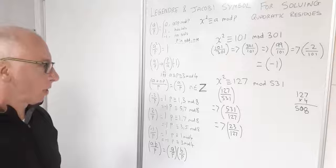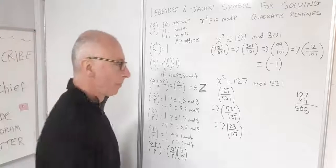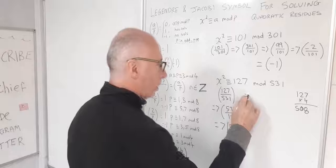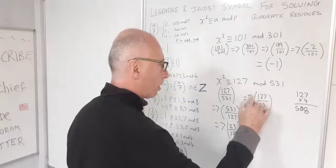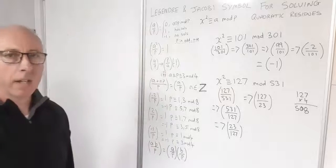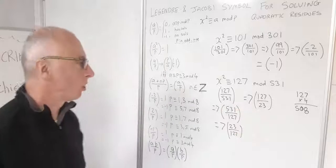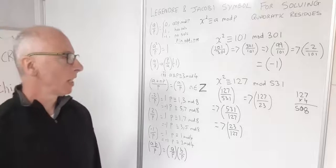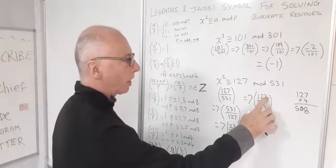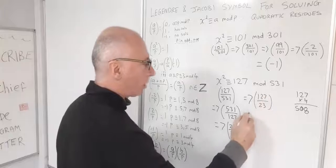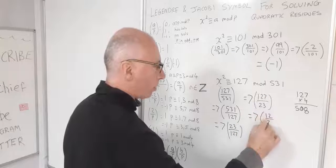That looks like prime numbers in the top and bottom, so I'm going to flip it again. Now I've got (127/23). Let's deduct a multiple of 23 from 127: 23 times 5 is 115, leaving 12. So now I have (12/23).